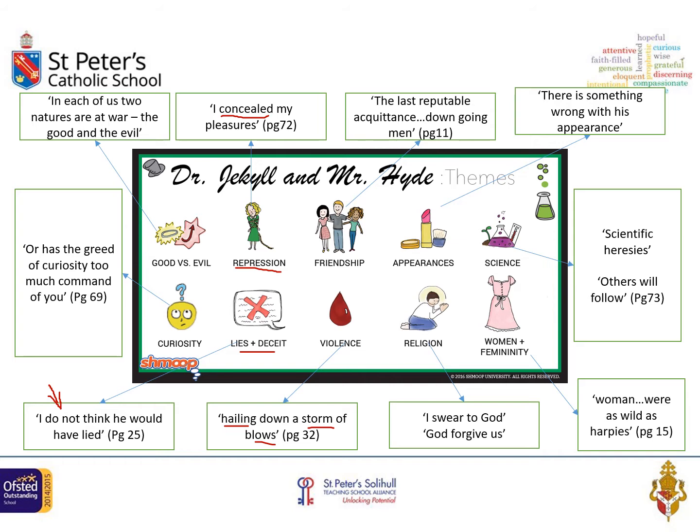On lies and deceit: it's really only on a second reading that you realise how many times Jekyll has lied to Utterson. When Hyde meets Utterson for the first time and Utterson mentions common friends, Hyde says 'I do not think you would have lied' — Hyde actually tells the truth to Utterson, whereas in Jekyll's form he often lies and keeps things private. Remember that at the beginning of the novel, Stevenson makes a real point of demonstrating that Utterson is somebody to be trusted — 'the last reputable acquaintance of down-going men.'